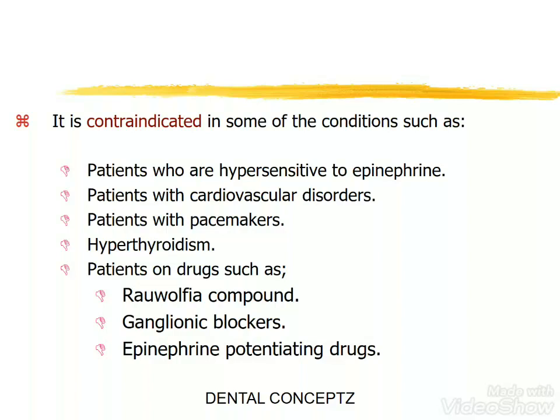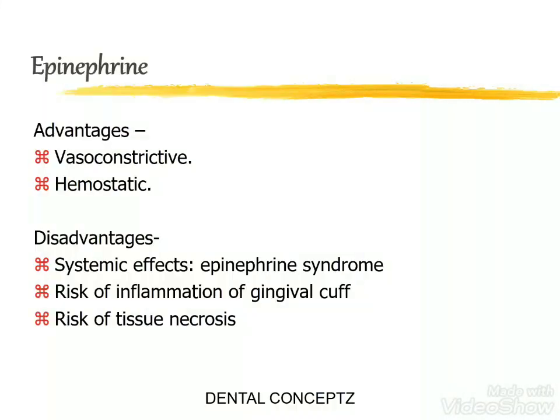Epinephrine is contraindicated in patients who are hypersensitive to epinephrine, in patients with cardiovascular disorders, patients with pacemakers, in cases of hyperthyroidism, and in patients on drugs such as Rauwolfia compounds, ganglionic blockers, and epinephrine-potentiating drugs. The advantages of epinephrine are that it is vasoconstrictive in nature and provides hemostasis. The disadvantages are that it can cause systemic effects like epinephrine syndrome, there is a risk of inflammation of the gingival cup, and it can cause tissue necrosis.